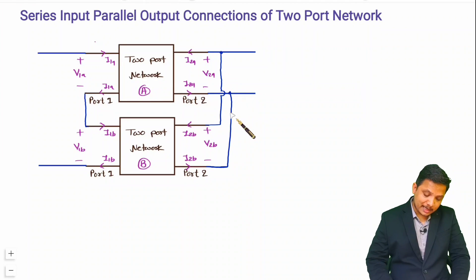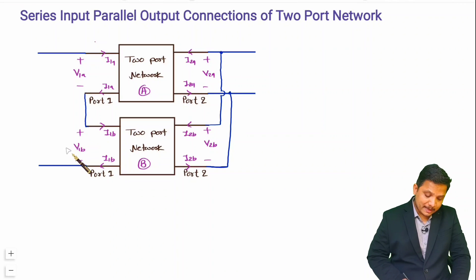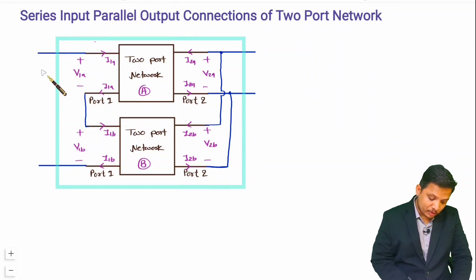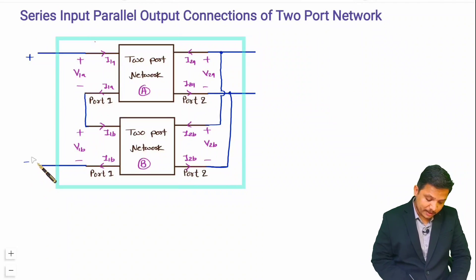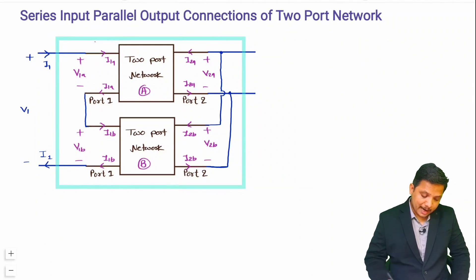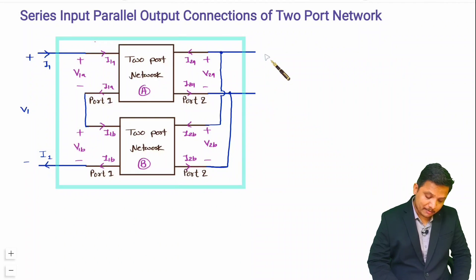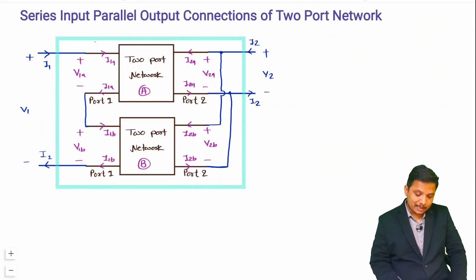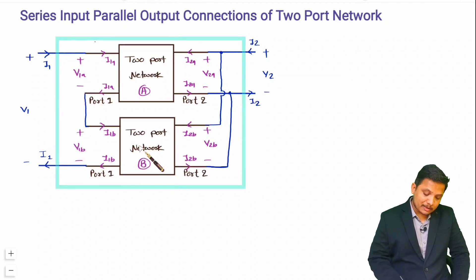So that is how the parallel connection is at the output side and series connection is at the input side. This is my equivalent two-port network. At port 1 the voltage is V1, current going inside is I1, and current coming out is I1. At port 2 the voltage is V2, current going inside is I2, and current coming out is I2.